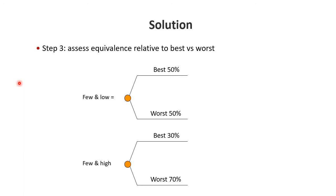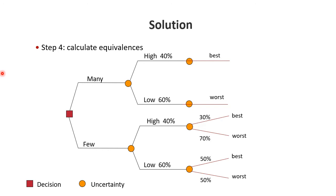For few-low we say it's neither best nor worst, so we assign 50 percent each. For few-high we're a little more careful and say it's only 30 percent best and 70 percent worst — so we prefer few-high much less than few-low. Once we have that, we add an additional branch to the decision tree reflecting the equivalence rule: few-low has an equivalence of 50 percent best and 50 percent worst, and few-high has an equivalence of 30 percent best and 70 percent worst.